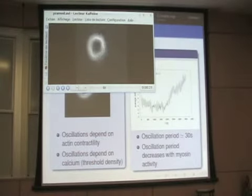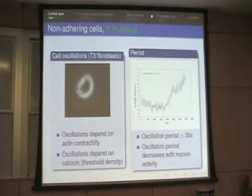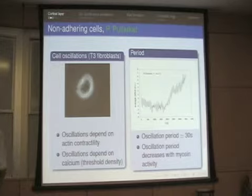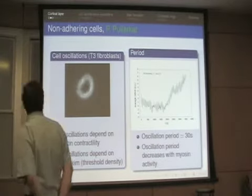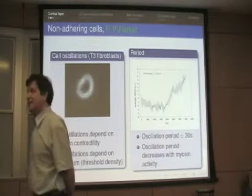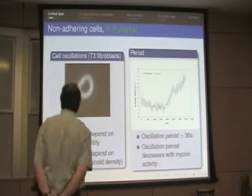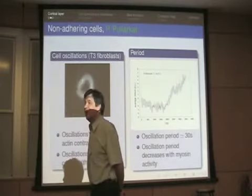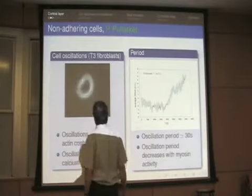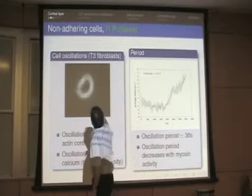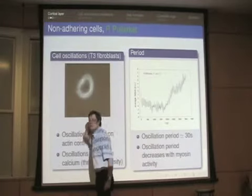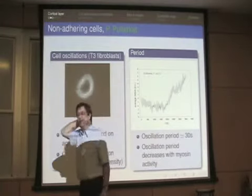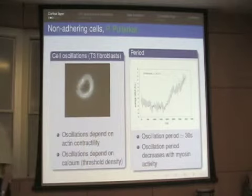Pranoid did the same kind of experiments: he inhibited myosins using blebbistatin. If you inhibit myosins, the oscillation stops. If you destroy actin, the oscillation stops as well. It's known that in these cells, actin is located close to the cell membrane in what is called the cortex. So in order to have the oscillations, you need both actin and myosin.